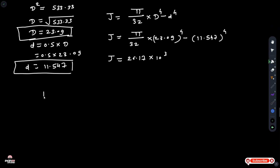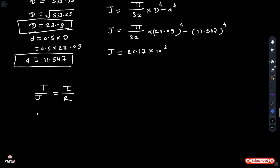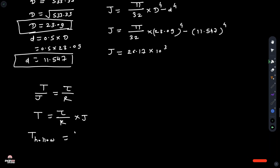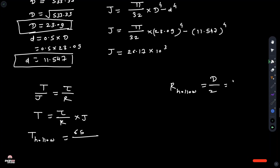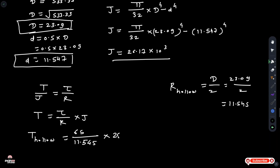Next, find the torque of the hollow shaft. Using T divided by J equals tau divided by r, rearranging gives T equals tau divided by r multiplied by J. For the hollow shaft, tau equals 65 N/mm², and r equals D divided by 2 equals 23.09 divided by 2, giving r equals 11.545 mm. Multiplying by the polar moment of inertia of 26.17 times 10 cubed.